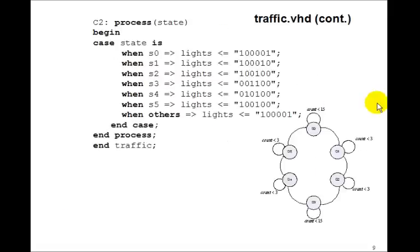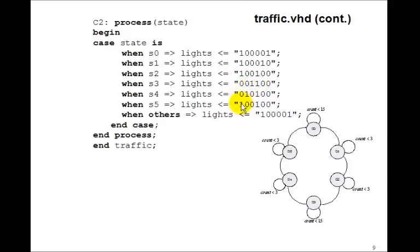Now let's look at our output combinational process C2 on signal state. Case state is: when S0, lights are red-green; when S1, red-yellow; when S2, red-red; when S3, green-red for five seconds; when S4, yellow-red; when S5, red-red. Then it goes back to S0, back to red-green.